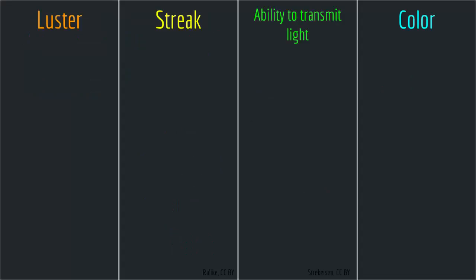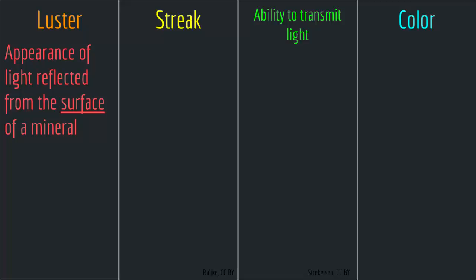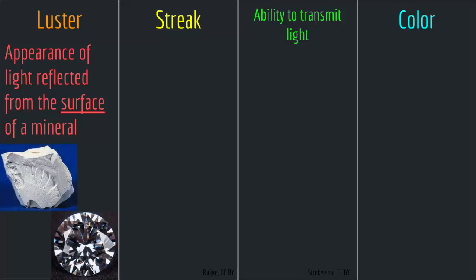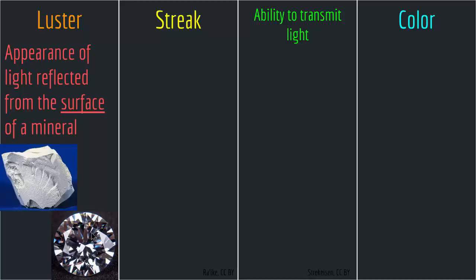Luster is the appearance of light reflected from the surface of a mineral. There are minerals like this one that do not reflect a lot of light. But for example, diamond has high luster and the surface of diamond reflects a lot of light. Therefore, we can use luster in order to identify a mineral. The second optical property is streak.